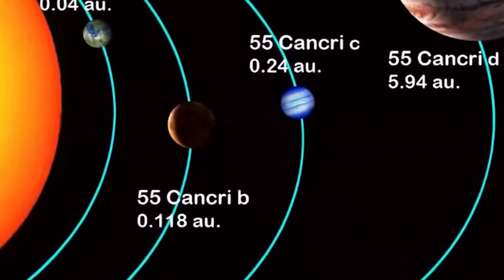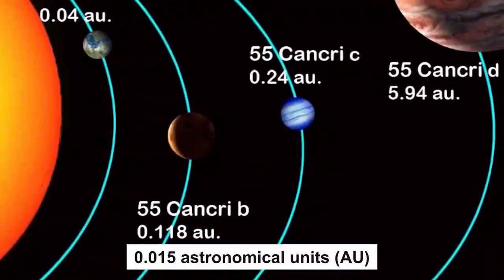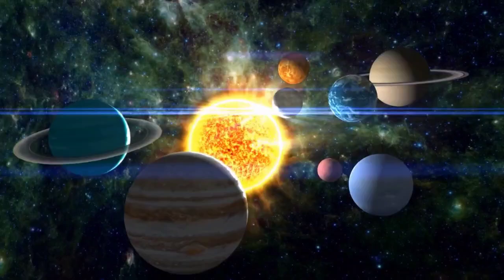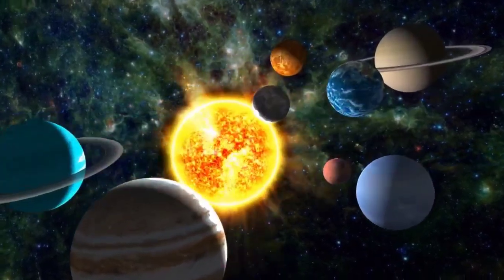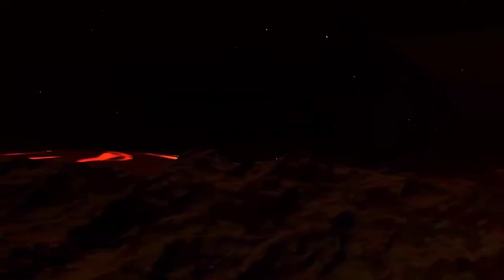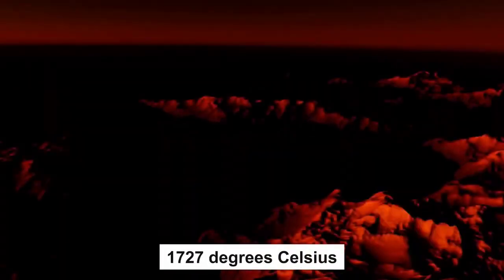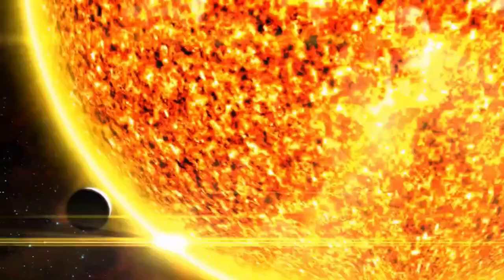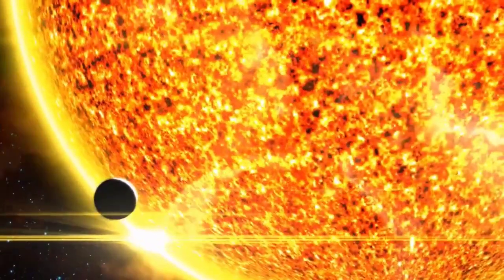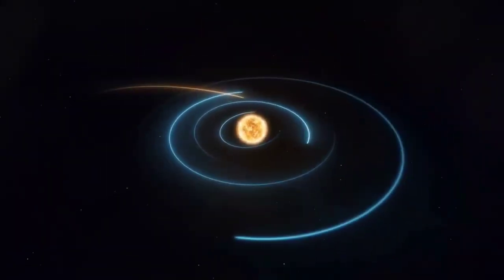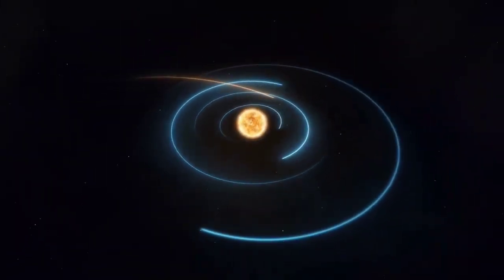It orbits its star at a distance of only 0.015 astronomical units (AU), making it closer than Mercury is to the Earth's Sun. With a scorching surface temperature of around 2,000 Kelvin, or 1,727 degrees Celsius, it is one of the hottest exoplanets in existence. This heat is due to the planet's proximity to its star, as it completes a full orbit in only 18 hours.